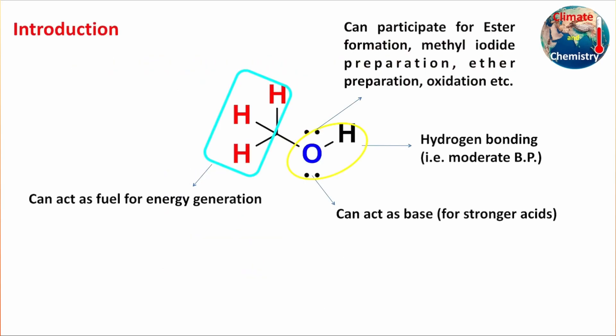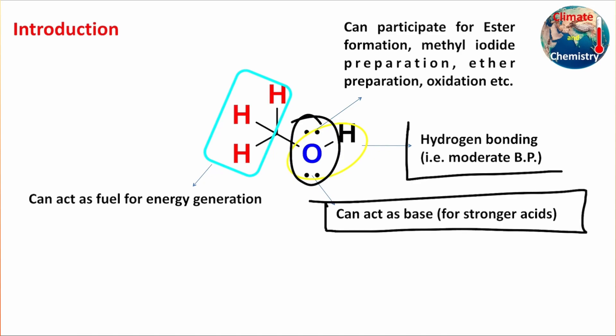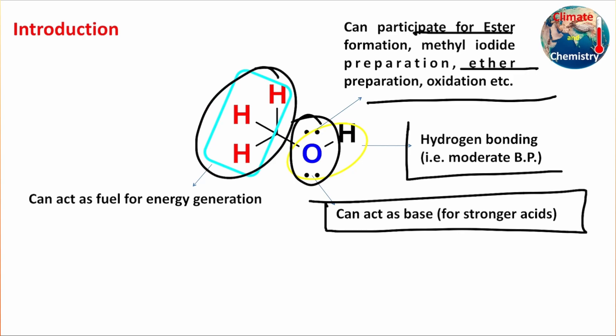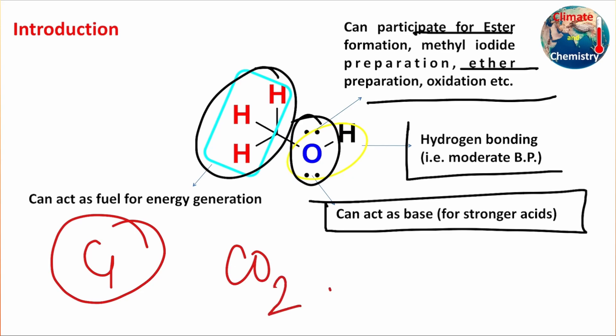Methanol, like other alcohols, shows hydrogen bonding. The oxygen, using its lone pair, can act as a base. It can participate in ester formation, ether preparation, and oxidation — these are very common. The methyl group can act in energy production, and methanol is actually a C1 feedstock like carbon dioxide, making it a very important chemical.